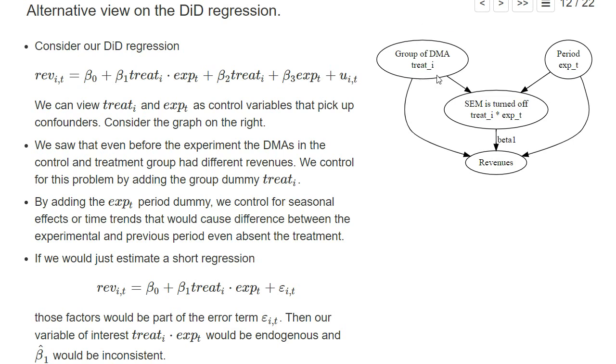Since we didn't have a perfectly randomized experiment and some DMAs, for example those with large revenues, were systematically not allowed to participate in the treatment to turn off their search engine marketing, we have to control for this systematic differences in the DMAs. We could do this by adding a dummy whether the DMA is in the treatment group or not.